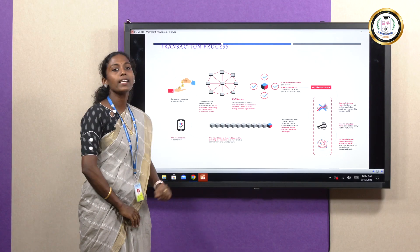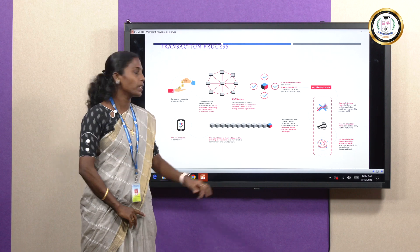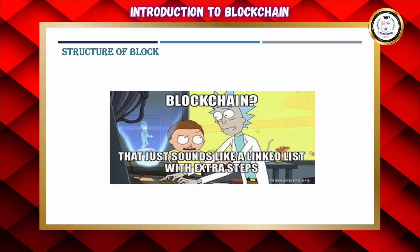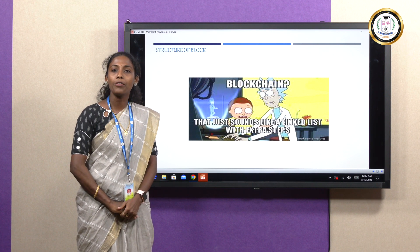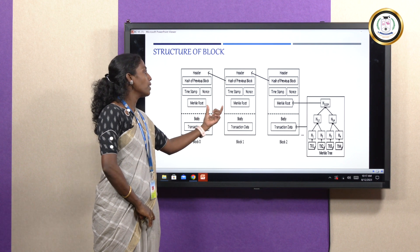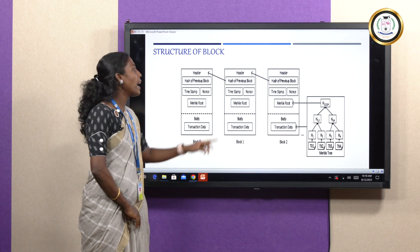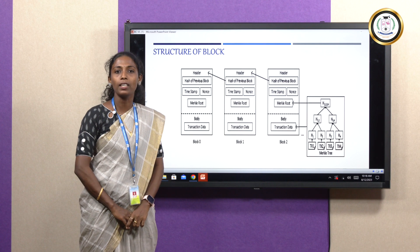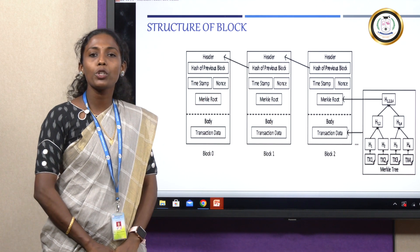After a validated transaction, it gets stored in blocks and this chain forms a Blockchain. A block is structured just like a Linked List, where each node holds a reference to the previous node. In the same way, Blockchain has a Linked List structure where blocks are linked cryptographically — the hash of the previous block is linked to the previous block header, so each block is interlinked cryptographically.